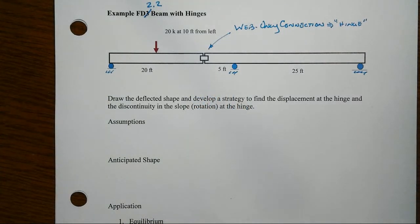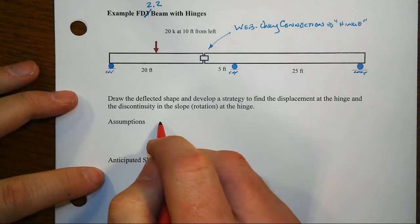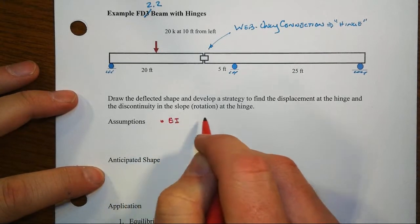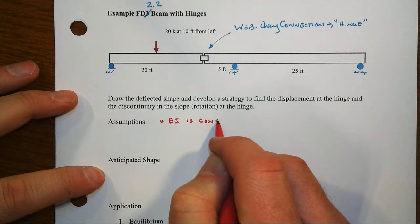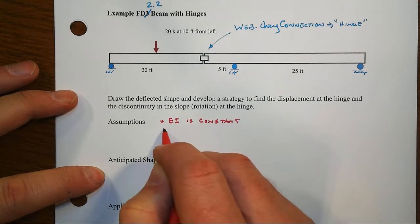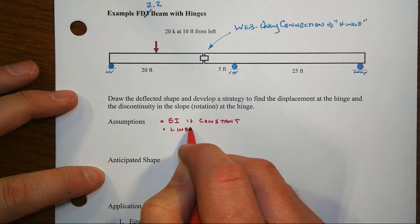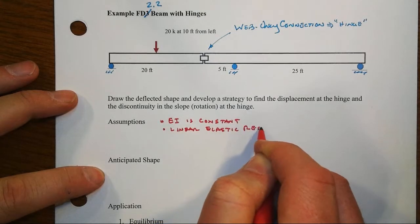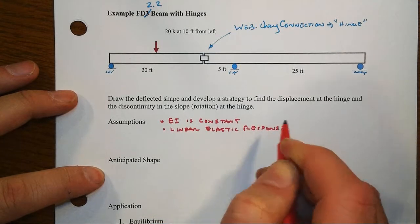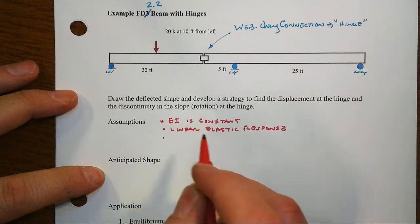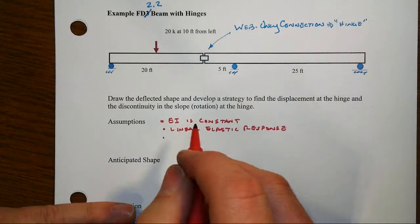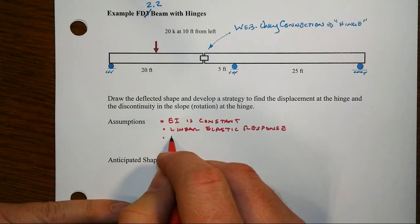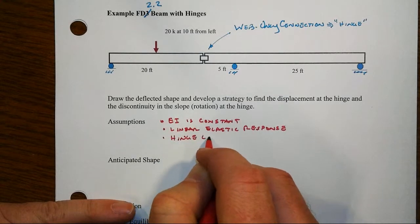So let's take a closer look here. Let's make a couple of assumptions. We haven't been given, for instance, what the EI is of the beam, so we'll assume that EI is constant. We'll also assume that we have linear elastic response or behavior. And we will also just state what we already have,